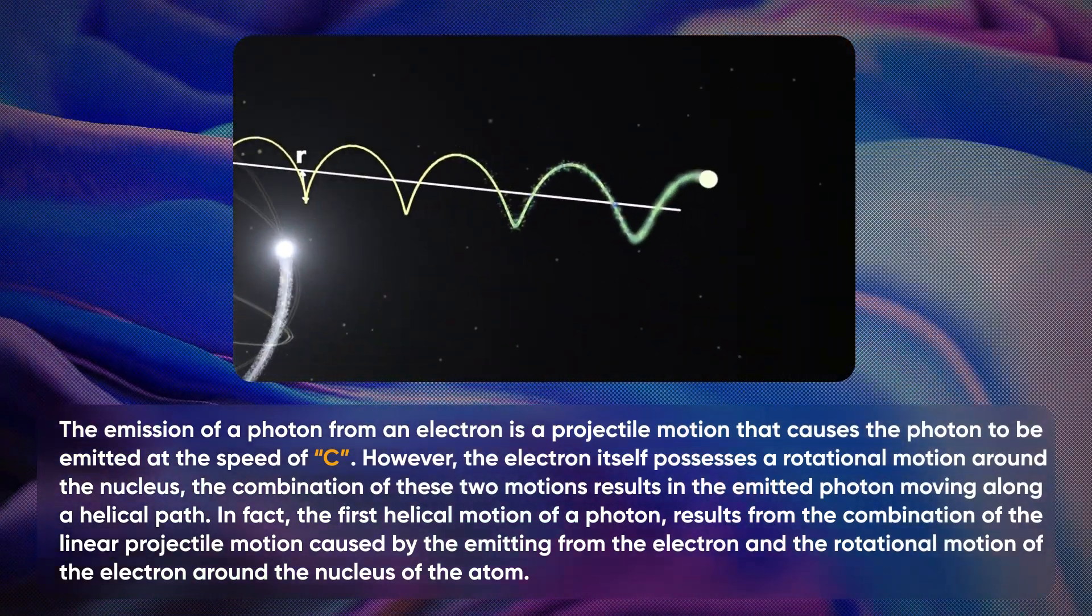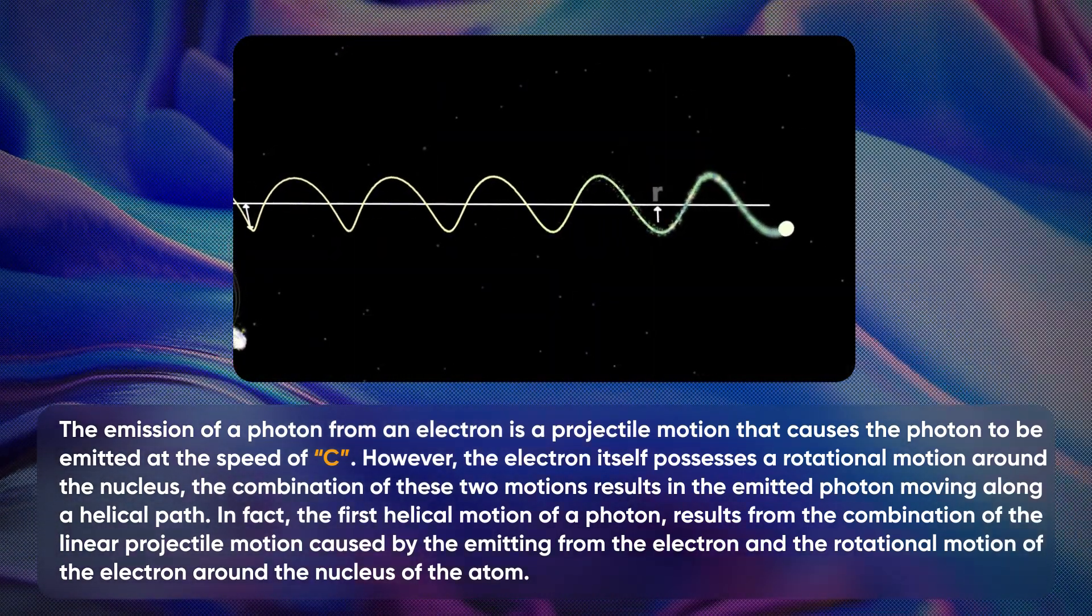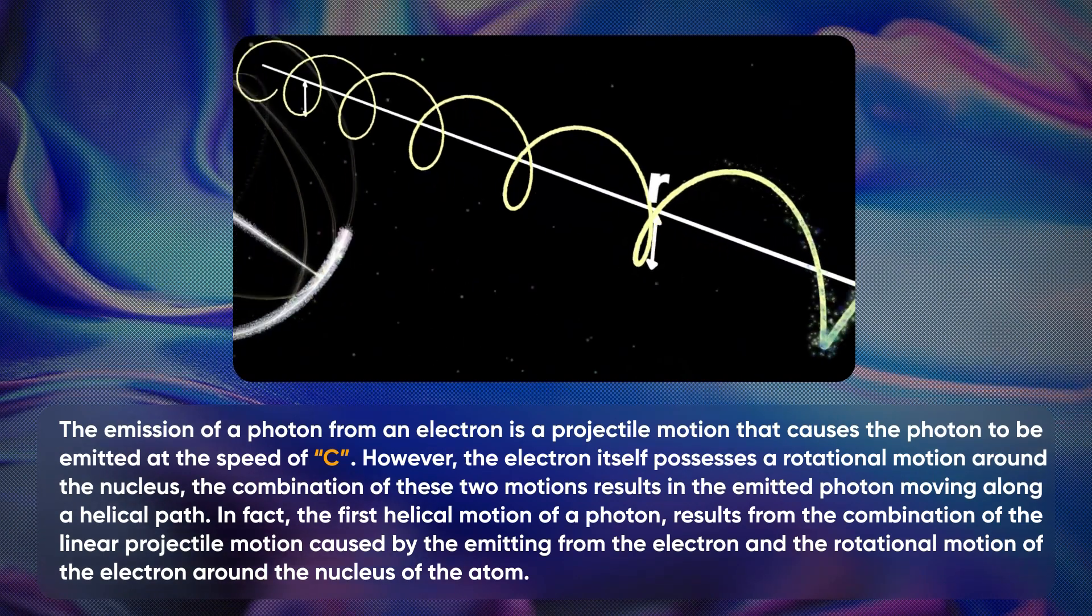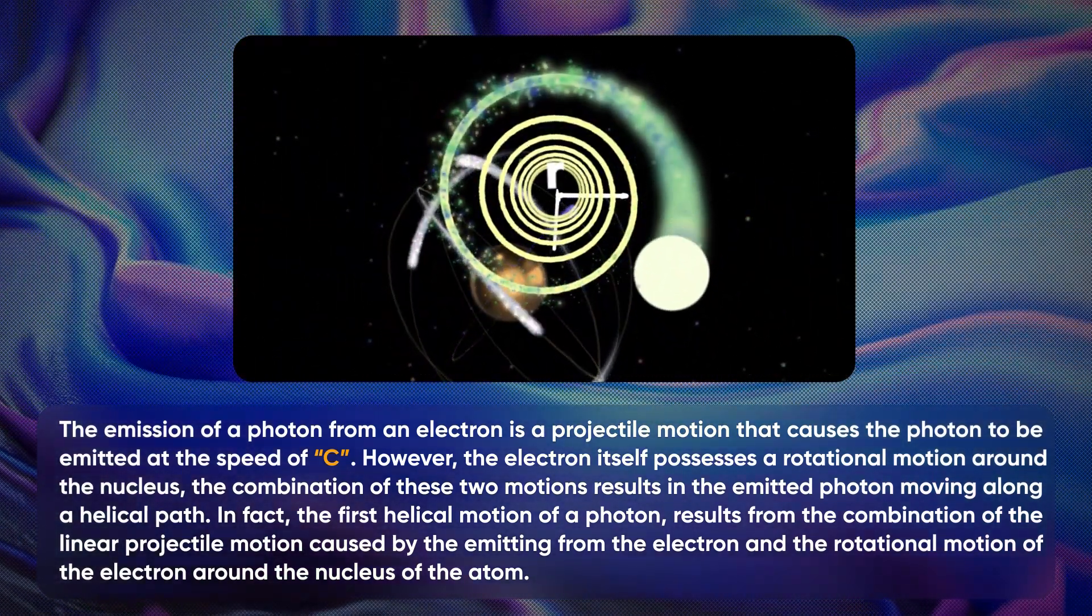In fact, the first helical motion of a photon results from the combination of the linear projectile motion caused by the emission from the electron and the rotational motion of the electron around the nucleus of the atom.